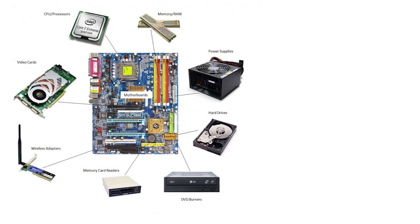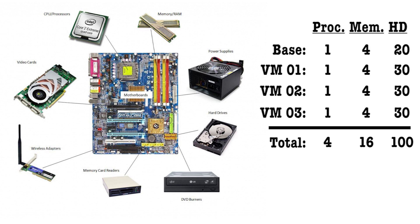The first thing you're going to need is hardware. The hardware you decide on using depends on how many and what type of virtual machines you're wanting to run. For instance, if you want three virtual machines each with a single processor, 4 gigs of RAM, and 30 gigs of hard drive space, you'll need at least 16 gigs of RAM, a 100 gigabyte hard drive, and a quad-core processor to run all the virtual machines and the host computer at the same time.